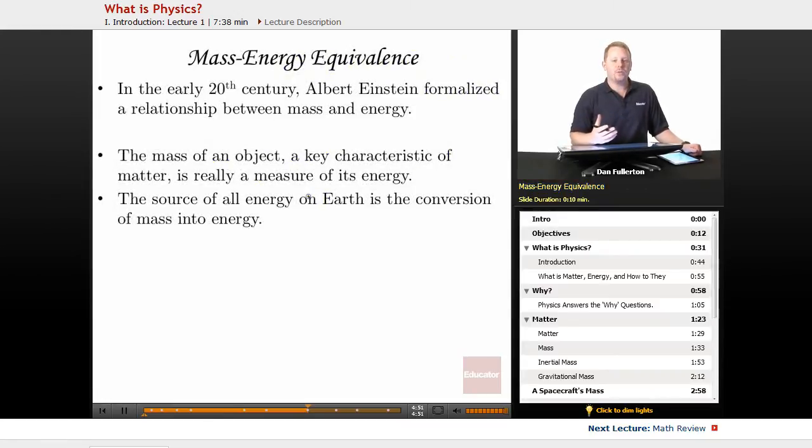Now, in the early 20th century, famous physicist Wild Hare, Albert Einstein, formalized a relationship between mass and energy. And it's become one of the most famous formulas in physics. His relationship says E equals mc squared. Where what he's saying is the mass of an object, a key characteristic of matter, is really a measure of its energy. Energy equals mass times the square of the speed of light. That's just a constant, just a number, a fudge factor to make the units work out.